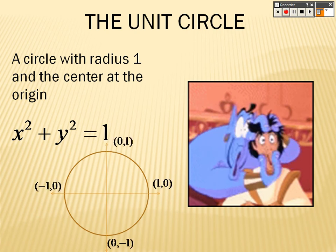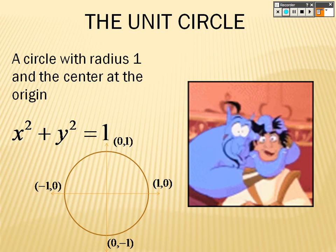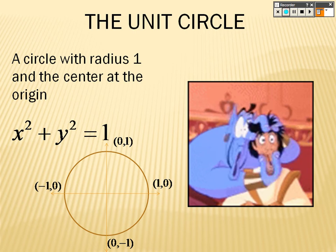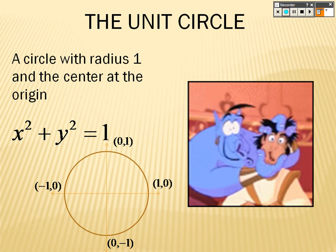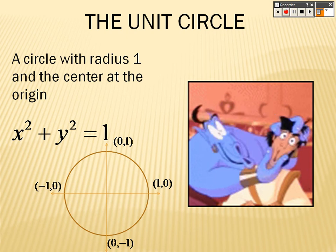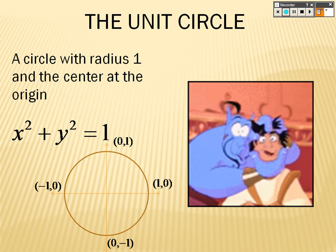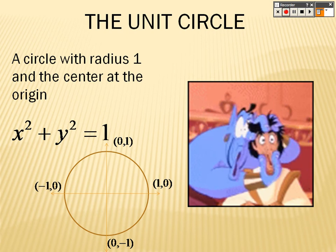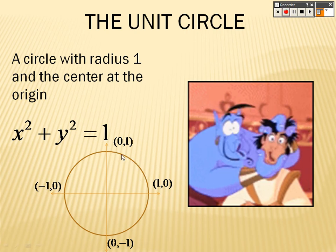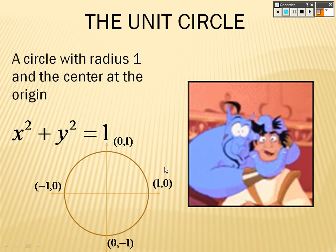These are the obvious points to keep in mind: (1, 0), (0, 1), (-1, 0), and (0, -1). Because that's one unit the whole way around on the unit circle with the center being (0, 0). But of course, as you can see, points like this that are on that circle exist as well the whole way around.